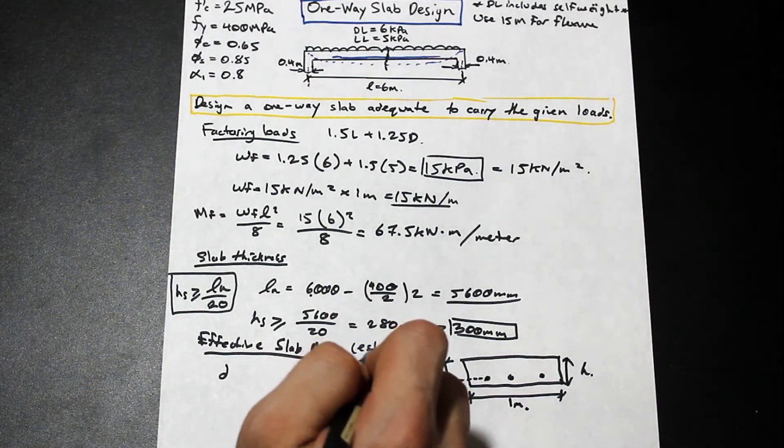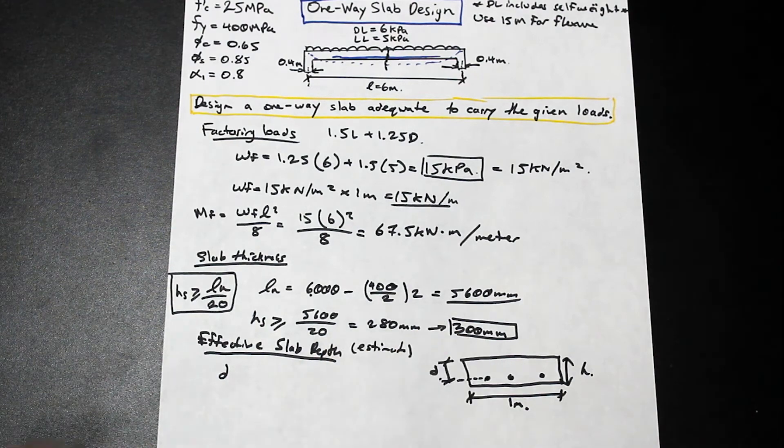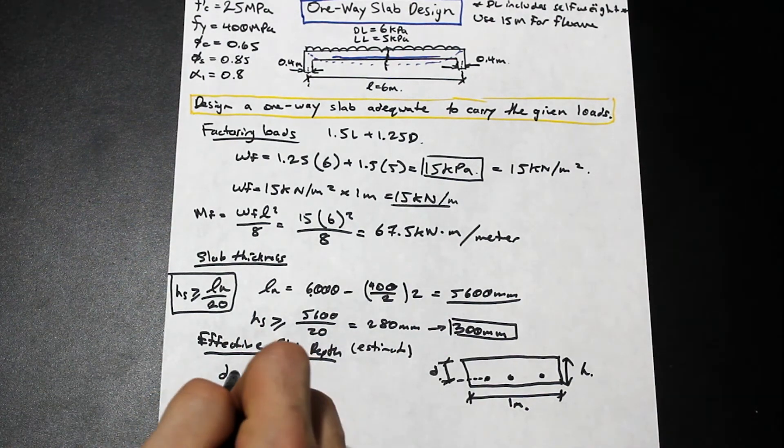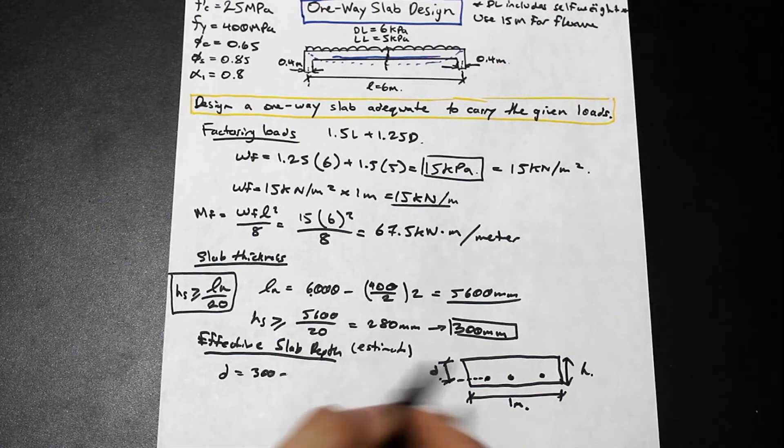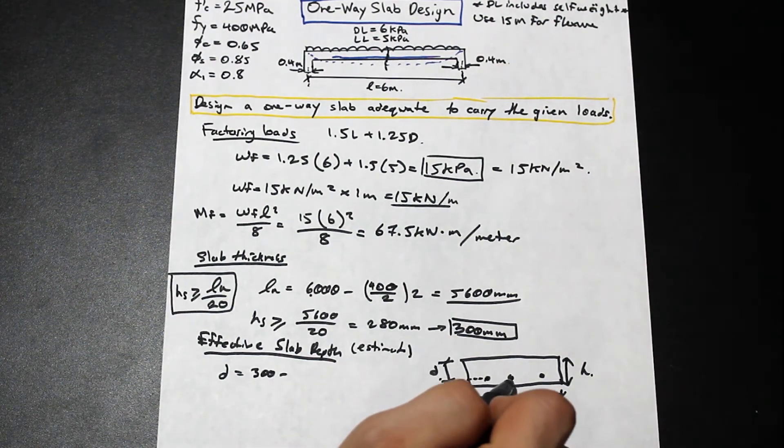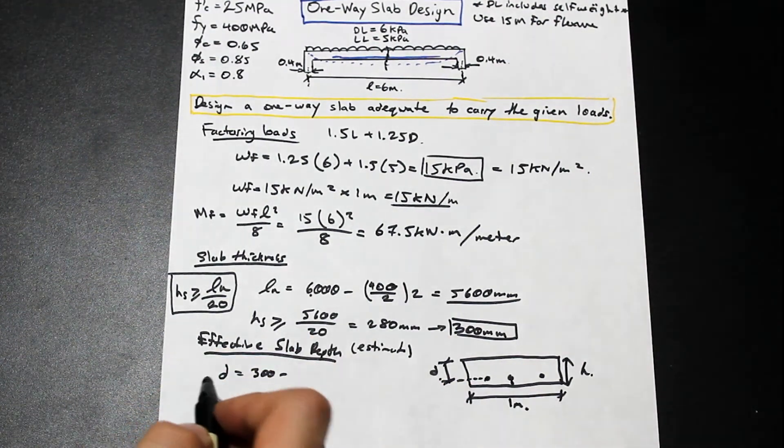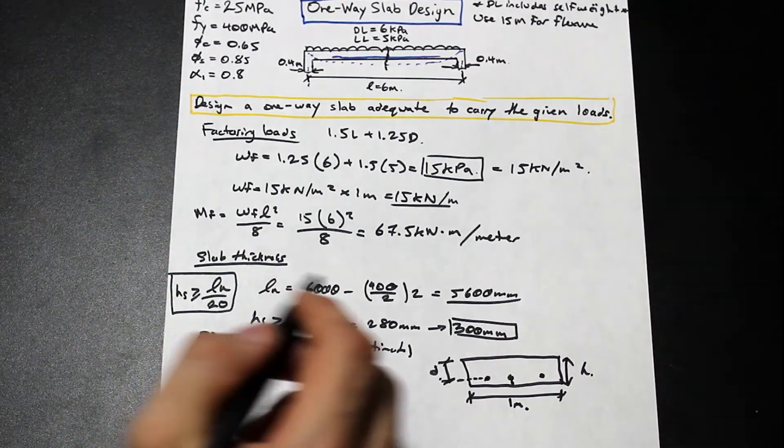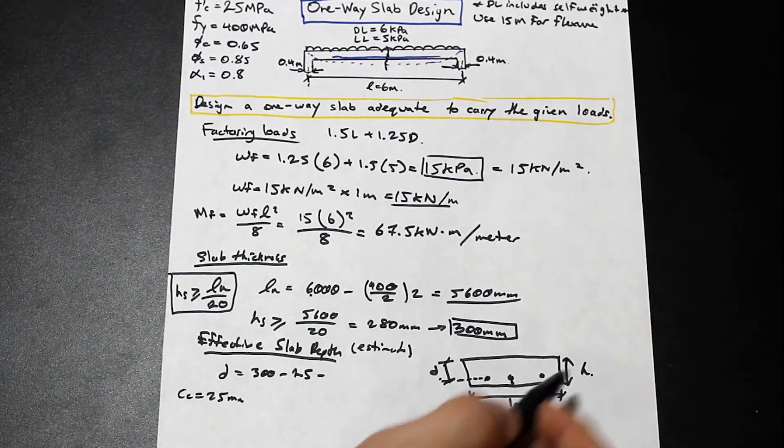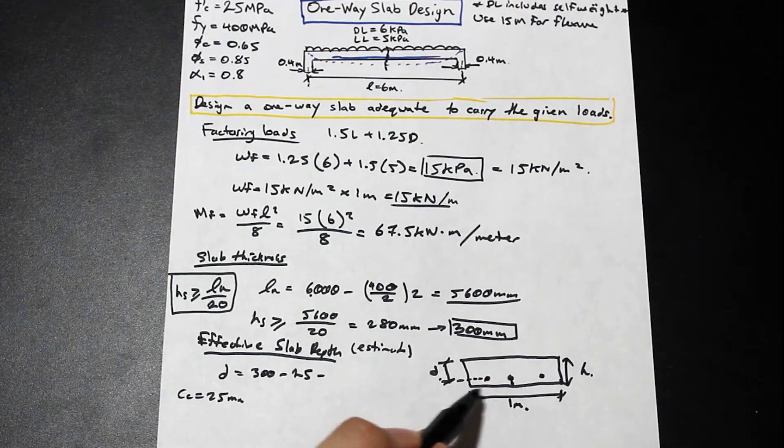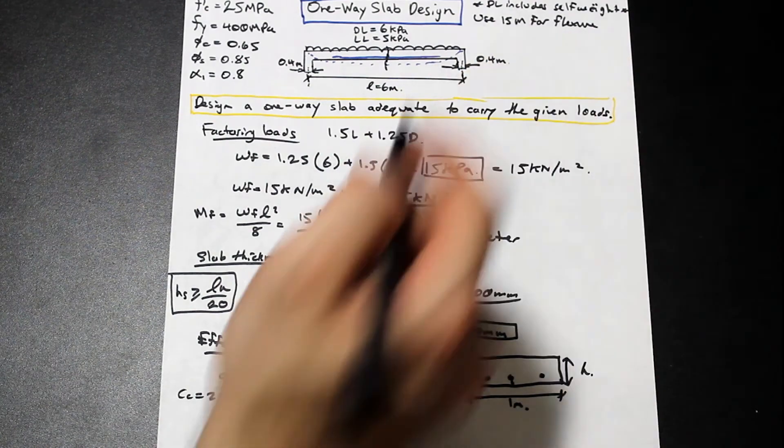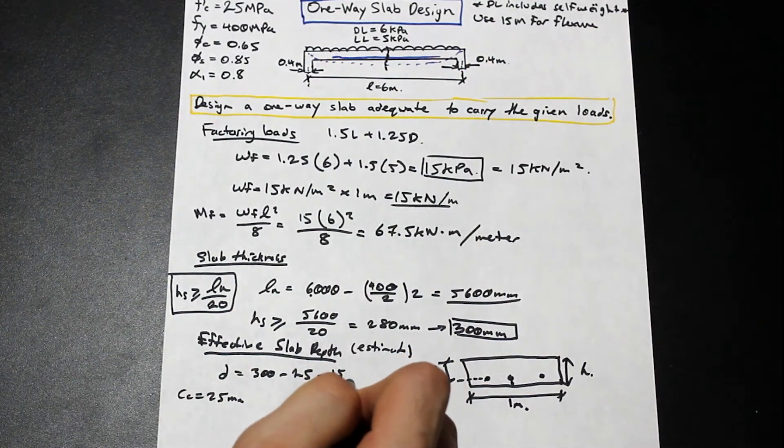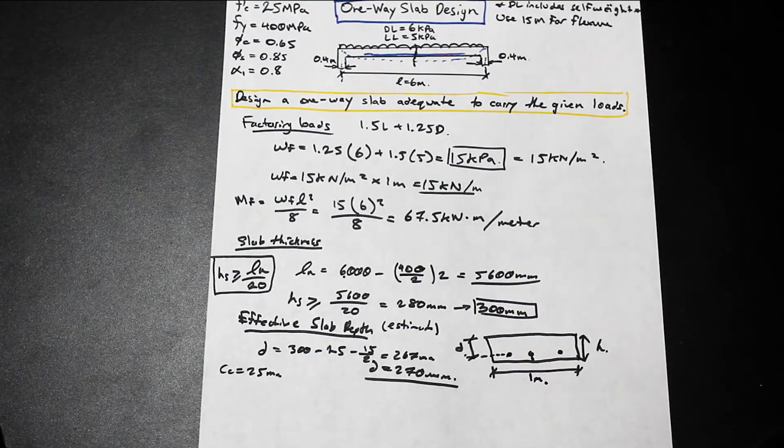So now that we have, we kind of establish what our effective depth is, we can go ahead and calculate it, and this is an estimate. So I'm just going to write estimate here, and I'll explain why in a second, but our effective depth is simply our entire height, so we have 300, minus the clear cover here. This is the clear cover. We're going to assume a clear cover of 25 millimeters, and we're going to go ahead and subtract the half of the distance of one bar, because D is to the center of the steel. So one bar is 15 millimeters, so we have 15 over 2. For calculation's sake, we'll make D 270.